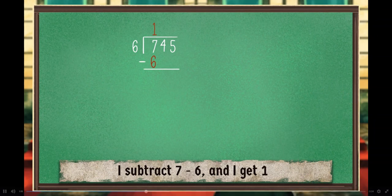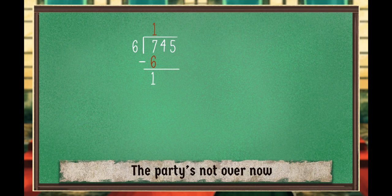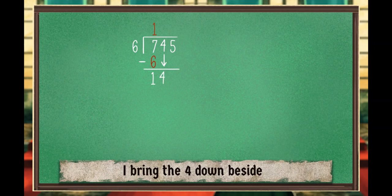The next part is fun. I subtract 7 minus 6 and I get 1. The party's not over now. I need to bring the next digit down. I bring the 4 down beside. I see 14. And now's the time to repeat these steps again.